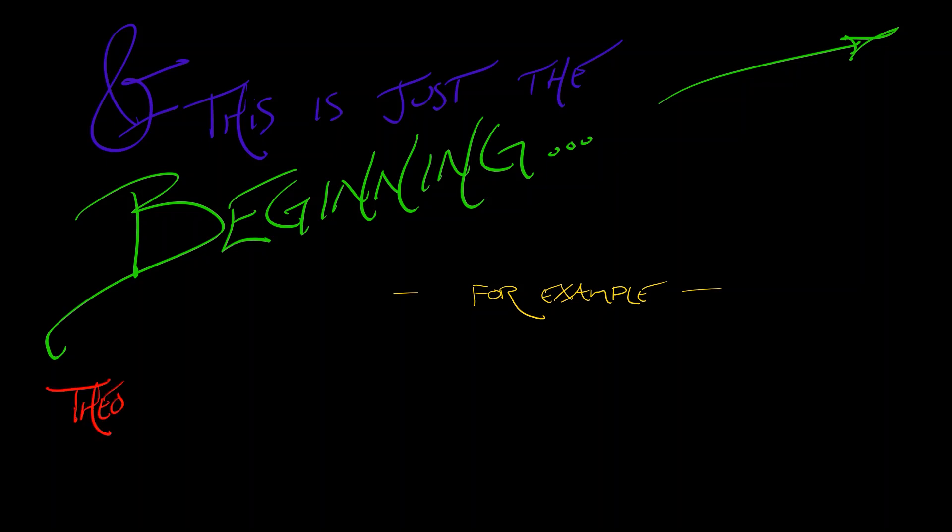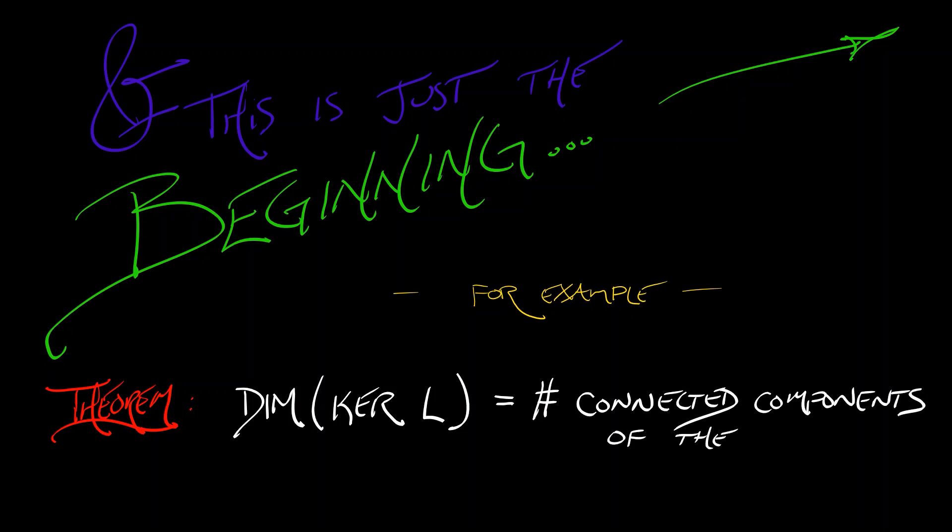For example, here's a theorem. If we look at the dimension of the kernel of this square matrix L, then what do we get? We get a number. What number is this? It is, in fact, the number of connected components of the graph. There's a relationship between, in this case, the eigenvalues and eigenspaces of this operator L and the global structural properties of the graph. This is just the beginning of a very, very large and lovely subject. We're going to focus on what it tells us about networked dynamical systems.